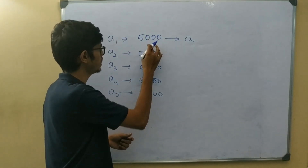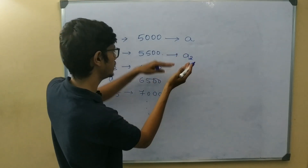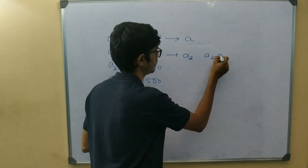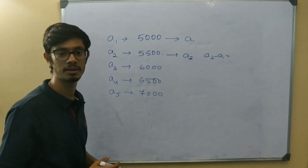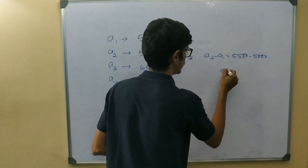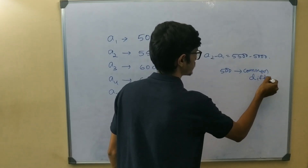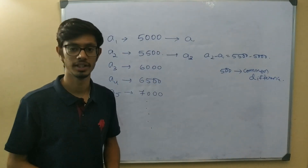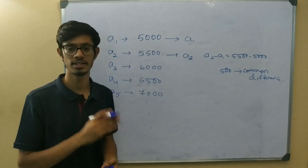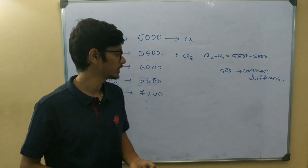If you want to find the salary difference, that is called the common difference. So between a1 and a2, we can find the difference: a2 minus a1. This is called the common difference. The difference between consecutive terms — each one and the next one — is the common difference. It must remain the same throughout.